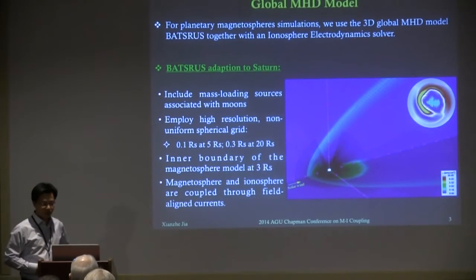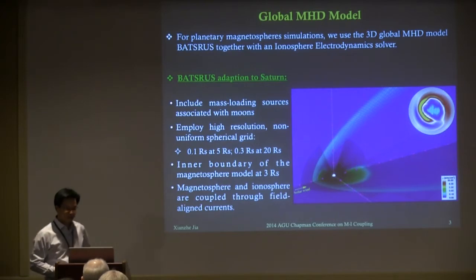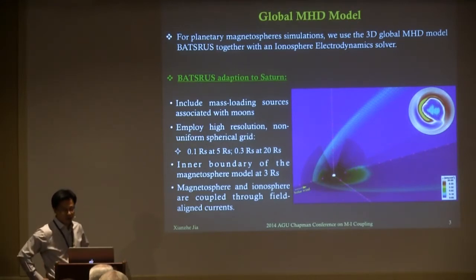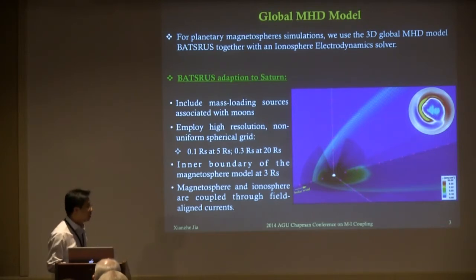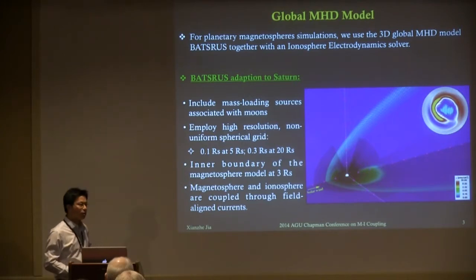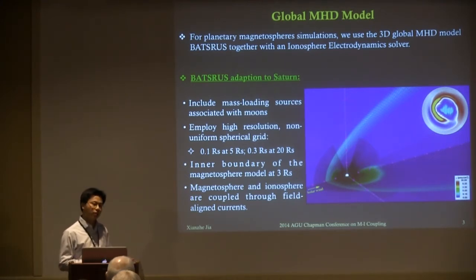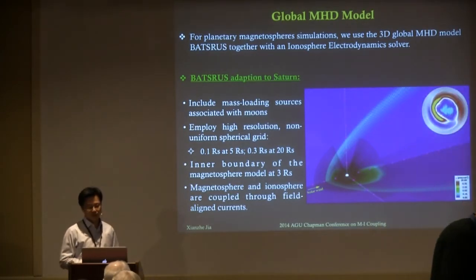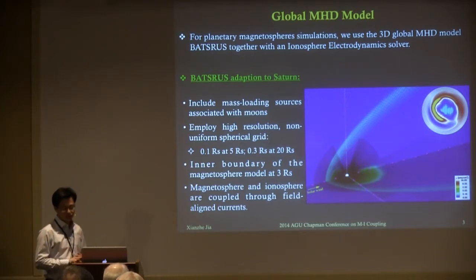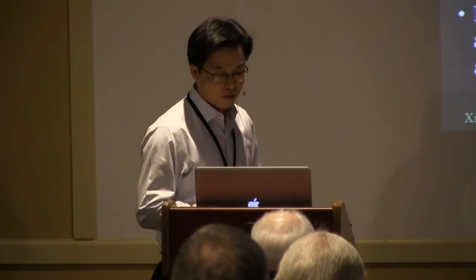In order to adapt the MHD model to Saturn, there are several things you need to consider. First, you need to include the mass loading source — the water group ions originating from Enceladus, which is the primary source of Saturn's magnetosphere. We have also transitioned from a conventional Cartesian coordinates grid to a spherical grid with high resolution near the body, the magnetosphere, the magnetopause, and the current sheet, in order to resolve the large-scale field-aligned currents. For these simulations, we have about 0.1 Saturn radii resolution in the inner magnetosphere.